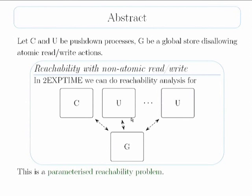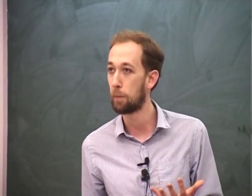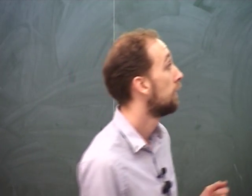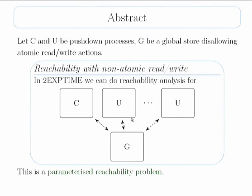We take these processes, put them in parallel, and they communicate through a global store called G. For the purpose of this talk, G will just have one variable. The processes can write to this store or read from this store, but they cannot do this at the same time — they cannot check a value and then set it atomically. If they want to look at a value and then write to it, they have to do that in two operations, so anything can happen in between. That's what we mean by non-atomic. The result is that we can decide in double exponential time whether a state is reachable.